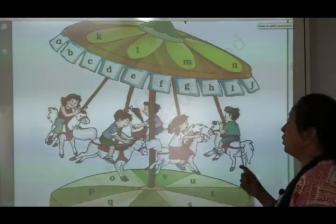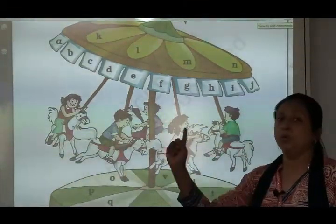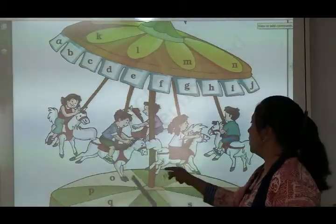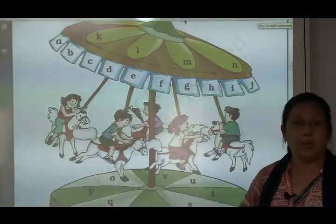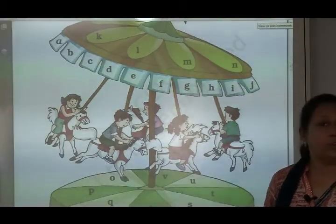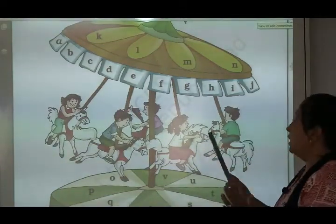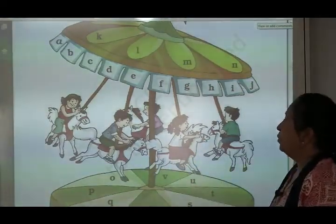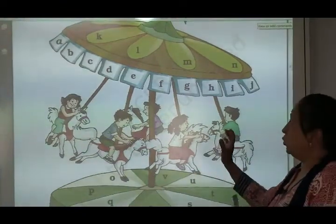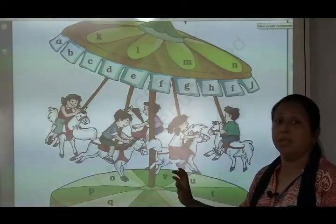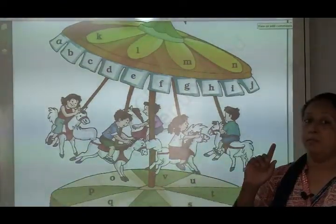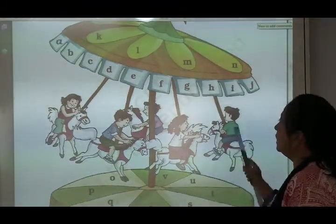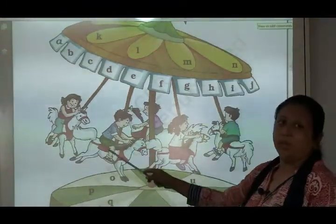What do we call merry go round? This is a merry go round, but here there is a horse. There is a car, elephant, different animals. So, this is a merry go round.